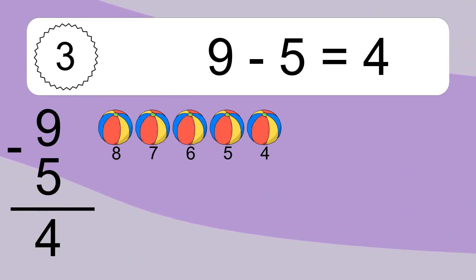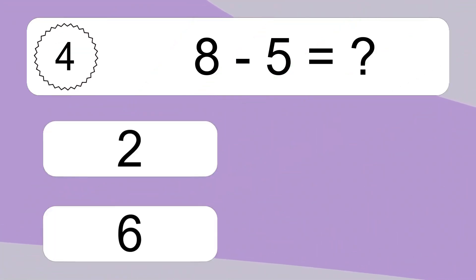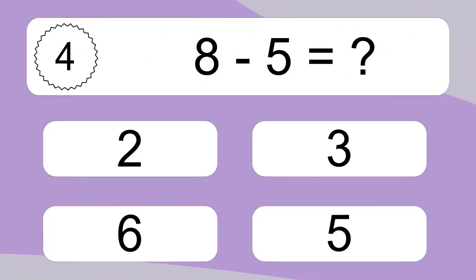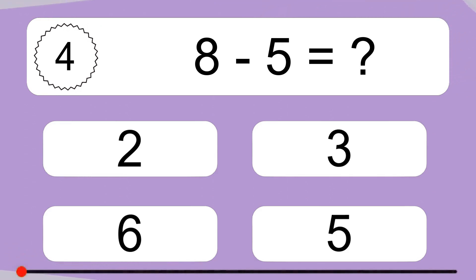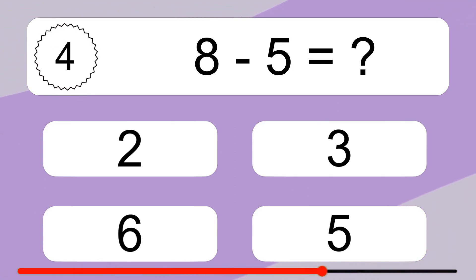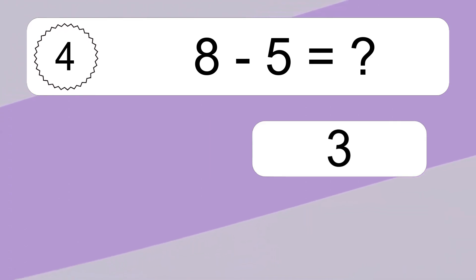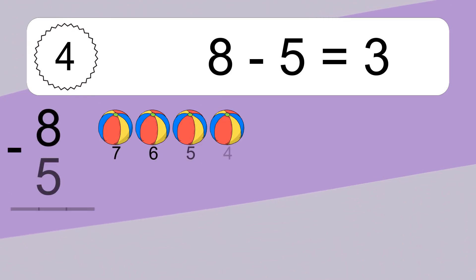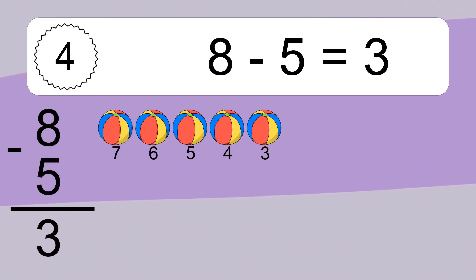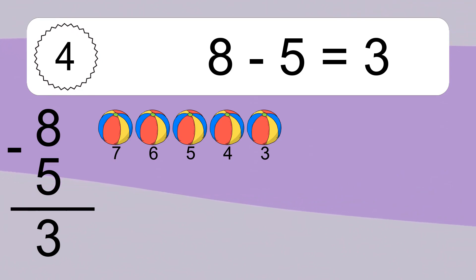8 minus 5 equals what? 8 minus 5 equals 3. Let's count it: 7, 6, 5, 4, 3.